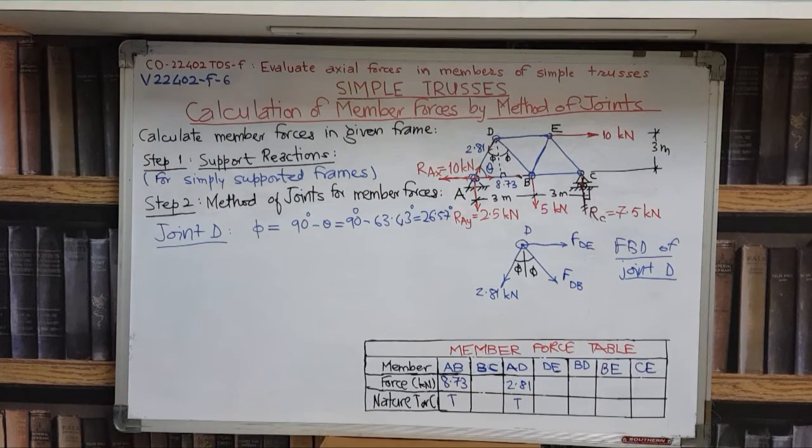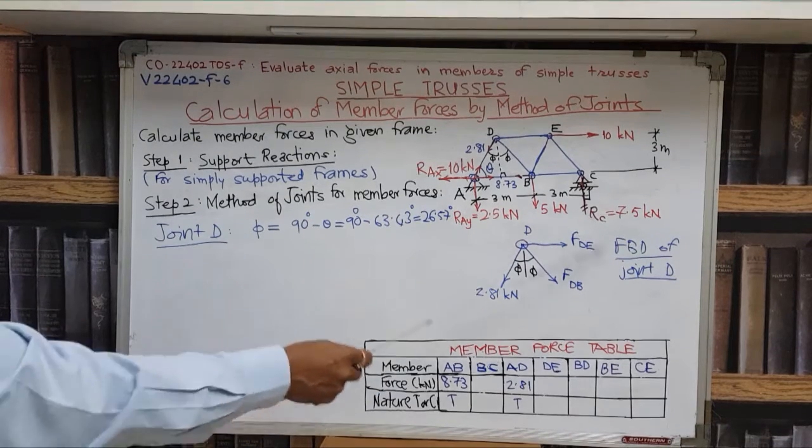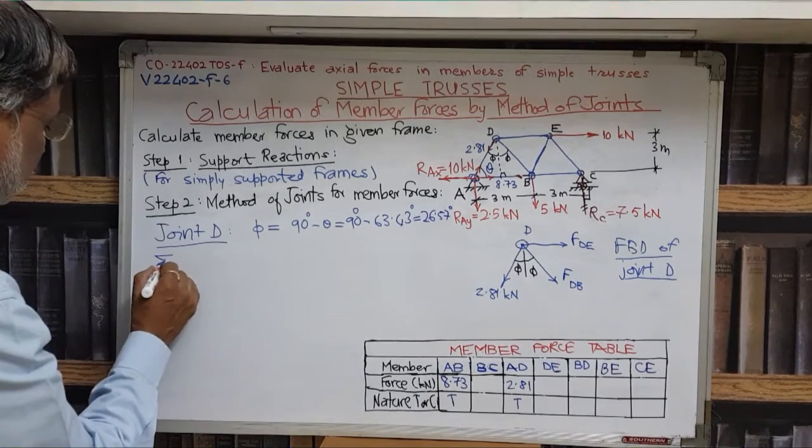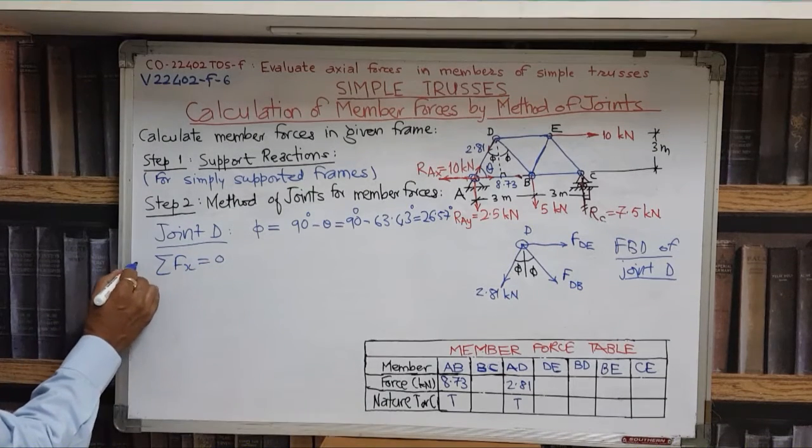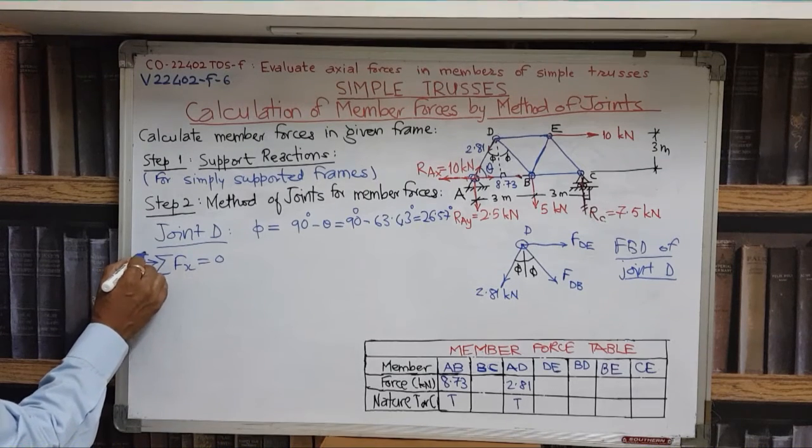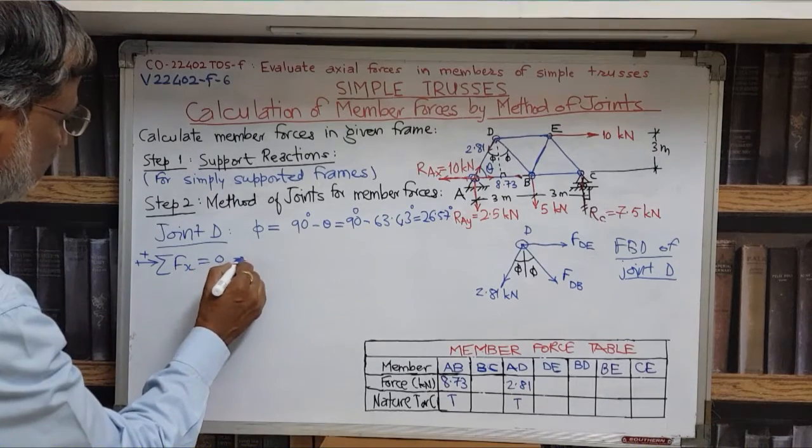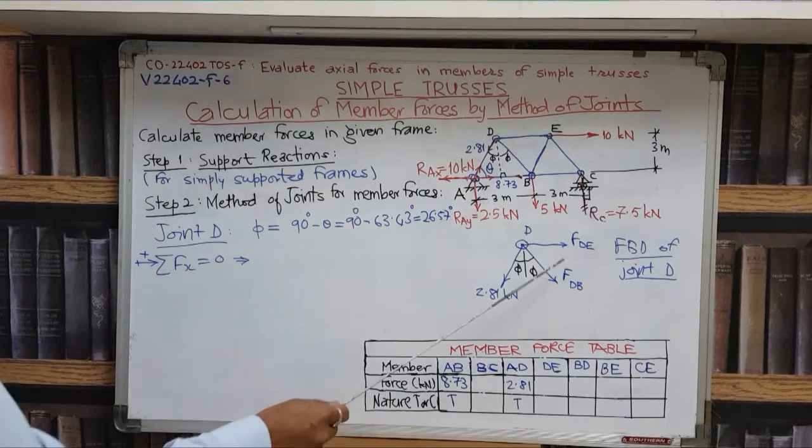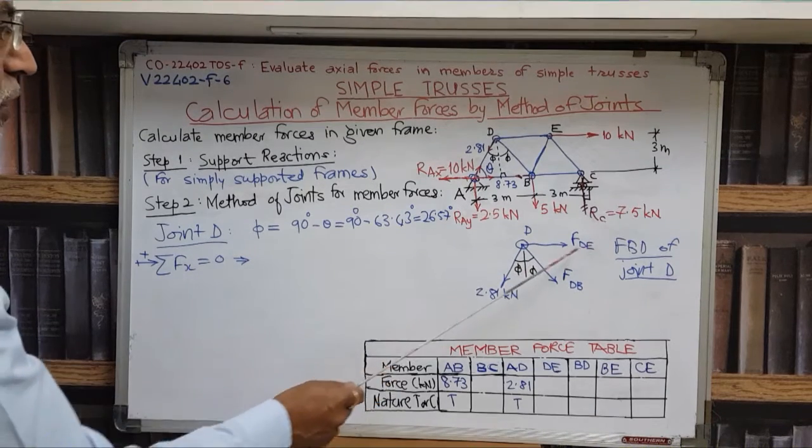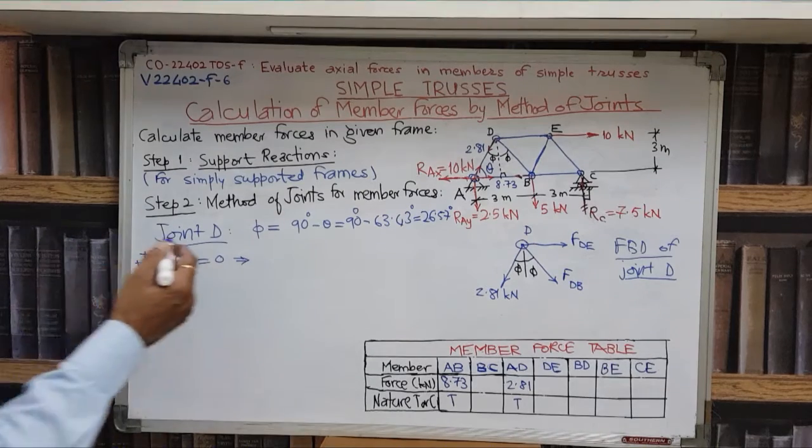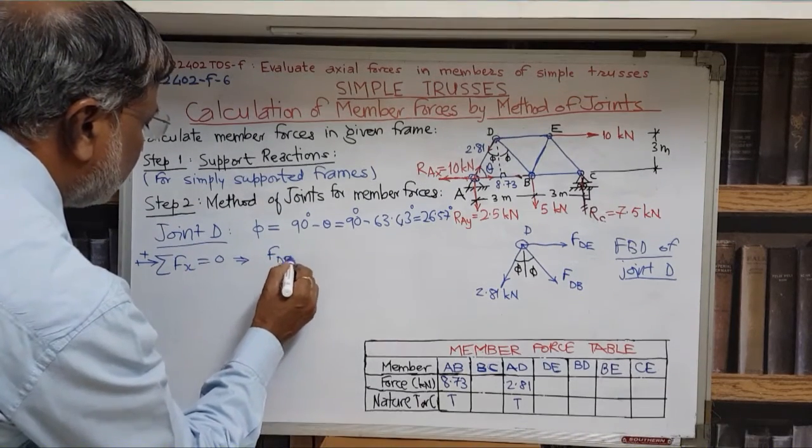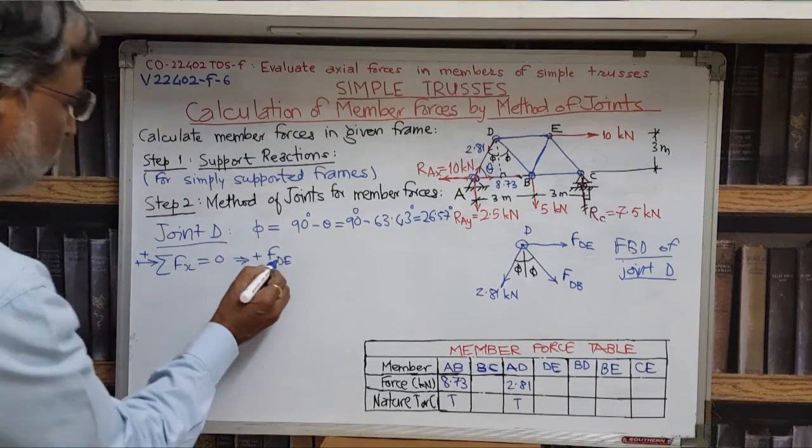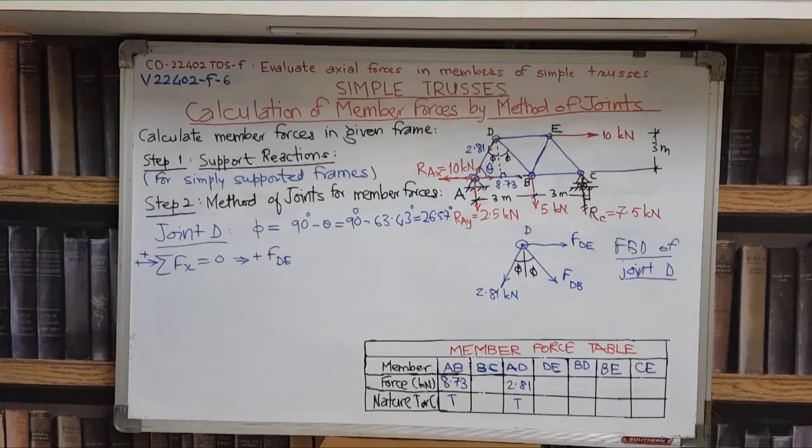Now we will continue to solve this joint. To analyze this joint means to apply conditions of equilibrium. So we will apply the first condition: Sigma fx equal to zero. For this we will assume the sign convention as the rightward force is positive. In these three forces, FDE is already in x direction towards right. So according to sign convention it will be plus FDE. Even though it is plus, you should write that plus sign also so that it is more clear.